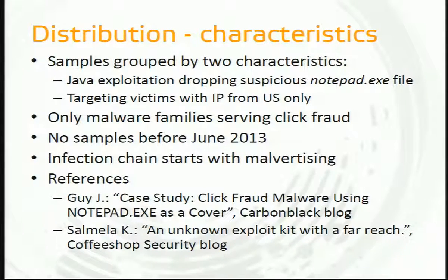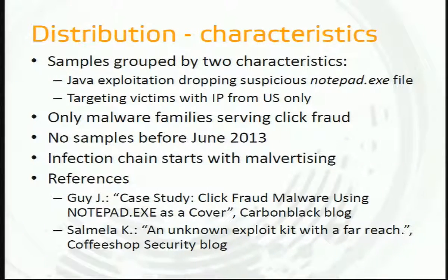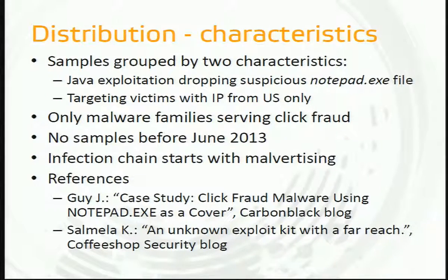When we analyzed binaries in our group, we realized that only malware families serving click fraud were involved. That was surprising because generally exploit kits serve various families like banking Trojans, ransomware, and remote access Trojans. Another fact was that no samples in our group arrived before June 2013, so we approximate that date as the start of this special distribution chain. Digging deeper in our data, we found the very first initial step is malvertising.